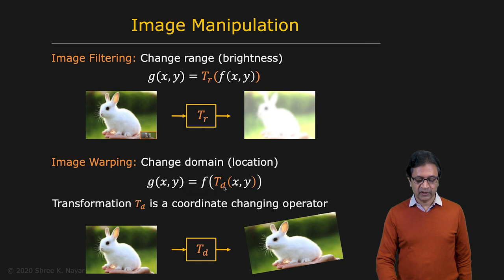But in this case, you're actually applying the transformation to X, Y. So here, you're not interested in changing the brightnesses and colors in the image. You're trying to change the shape of the image using this transformation TD, TD for domain and TR for range.